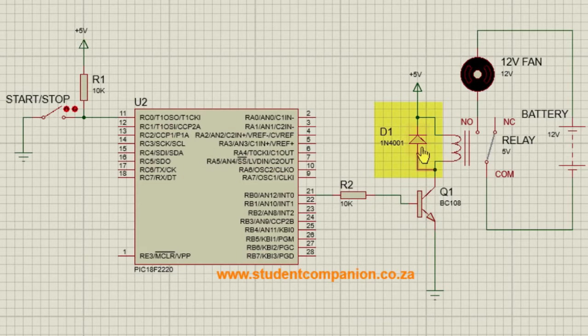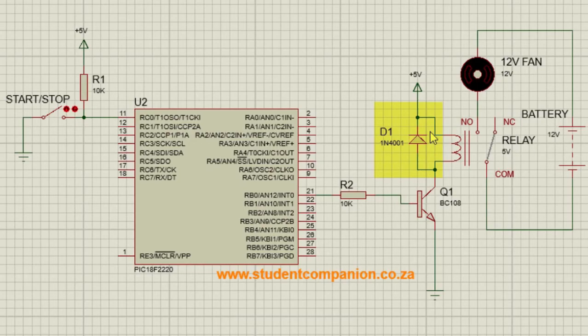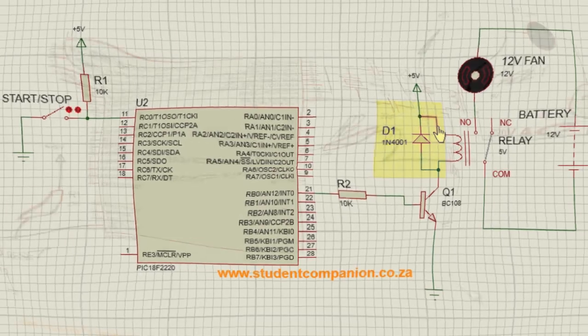Note that we used a back EMF suppression diode across the relay coil. This diode is called a freewheeling diode. Its role is to prevent damage to the transistor from the back EMF generated by the relay coil when the relay switches off.